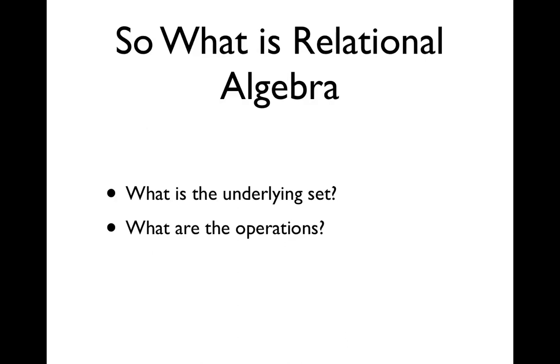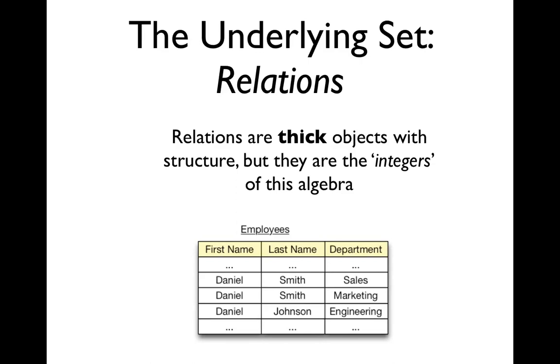So now, what's relational algebra? Well, not surprisingly, the underlying set is going to be the set of all relations. Relations in the context of relational algebra are slightly different from in the context of PIG. And the operations in place of plus and negation, you have things like you saw in PIG. Joins and merges and filters. The underlying set here is the set of all relations. They are obviously much more complicated than the integers, but they fill the same role in the algebraic structure.